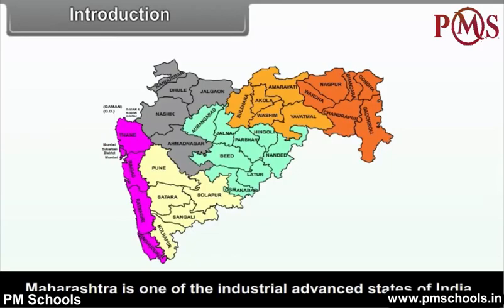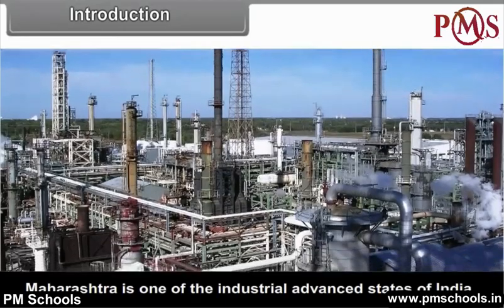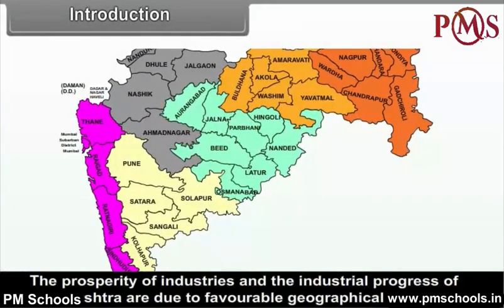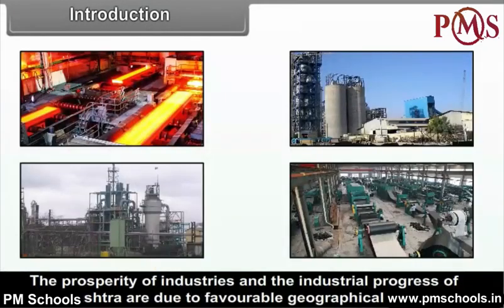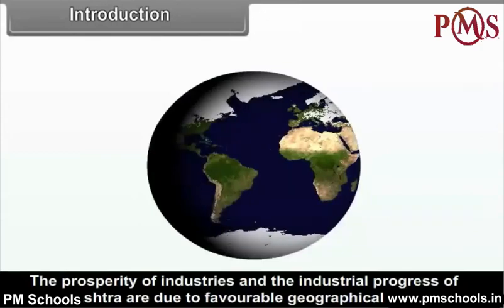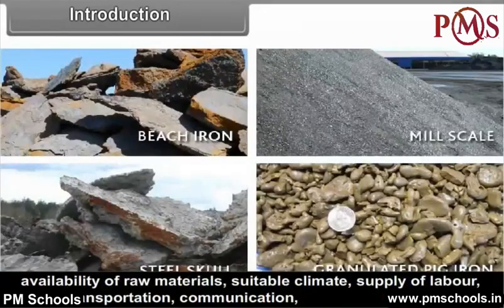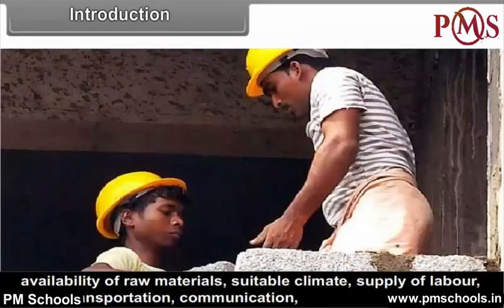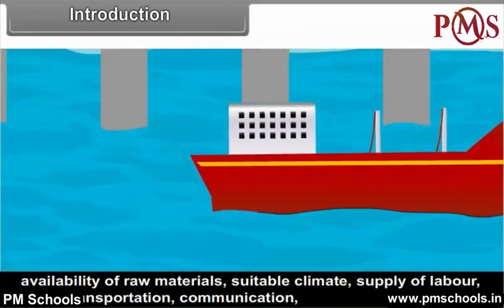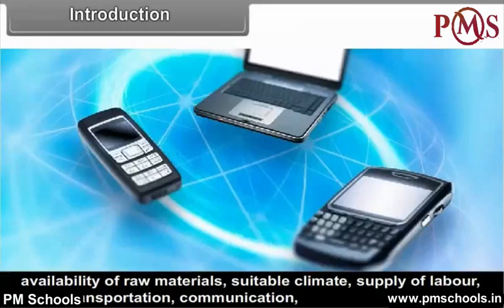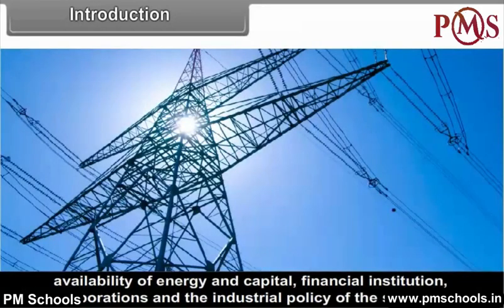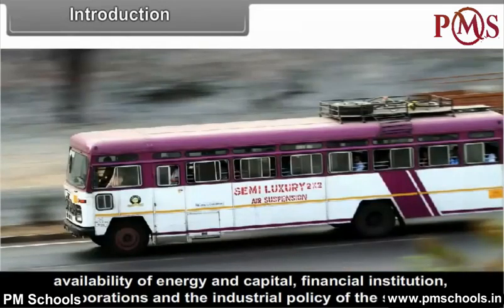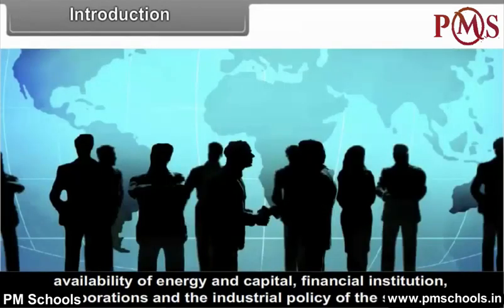Maharashtra is one of the industrially advanced states of India. The prosperity of industries and the industrial progress of Maharashtra are due to the favourable geographical conditions, availability of raw materials, suitable climate, supply of labour, water, transportation, communication, availability of energy and capital, financial institutions, corporations and the industrial policy of the state.